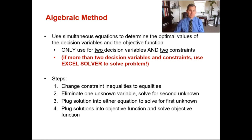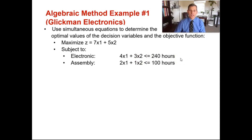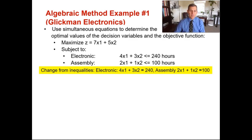This first example is Glickman Electronics, which you've seen a couple times already. Maximizing Z equals 7x1 plus 5x2 — that's your objective function, determined many lecture recordings ago. Subject to your constraints for electronics and assembly: 4x1 plus 3x2 is less than or equal to 240 hours for the electronics constraint, and 2x1 plus 1x2 is less than or equal to 100 hours for assembly. Step one: change from inequalities and make them both equal to.